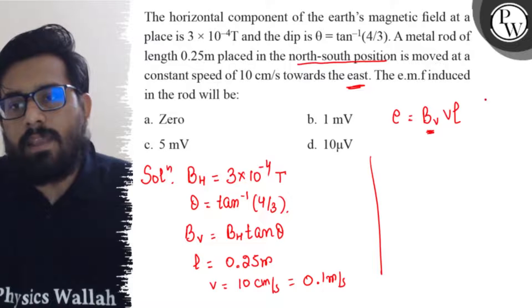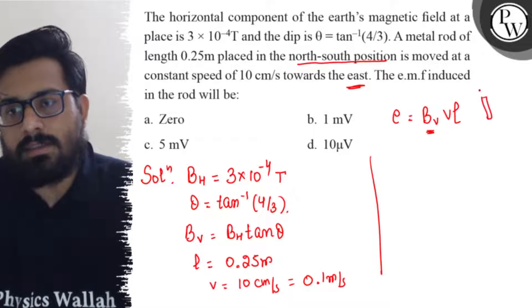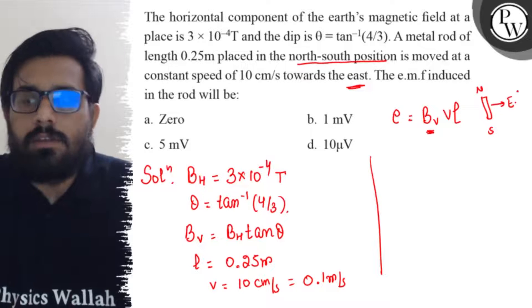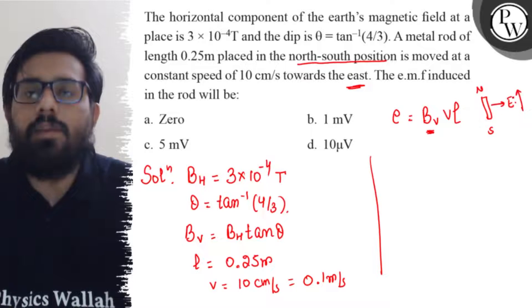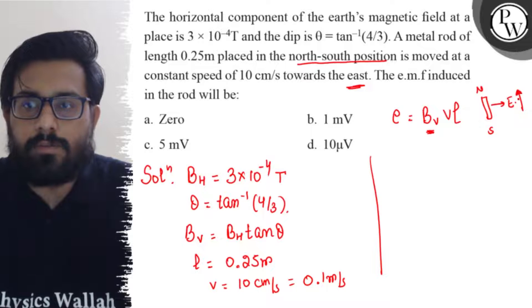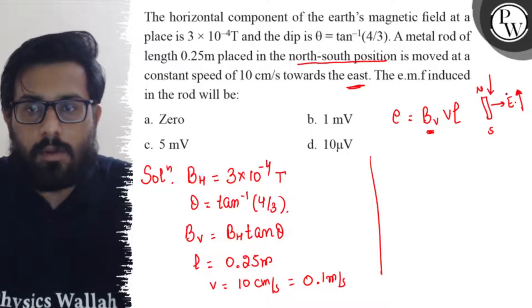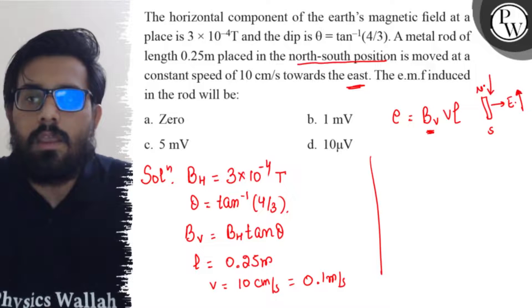So something like this, we have this rod over here like this. This is the north-south direction and this is moving like this towards the east. So in this particular scenario, the horizontal component, there will be no change in the horizontal component of the magnetic field. The change in flux is just because of the vertical component, not because of the horizontal component.